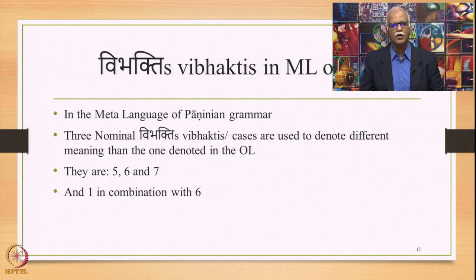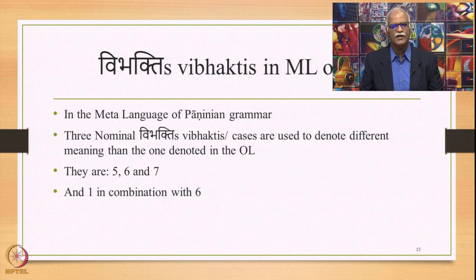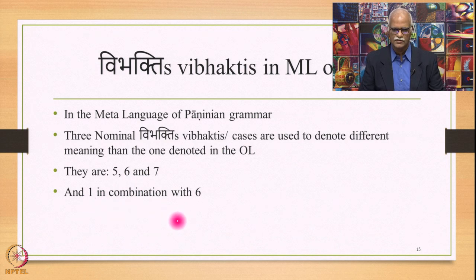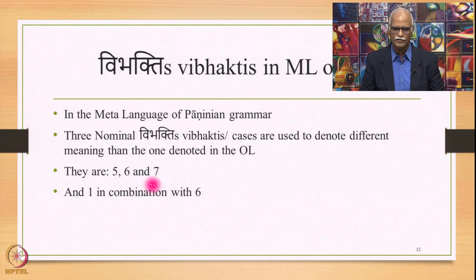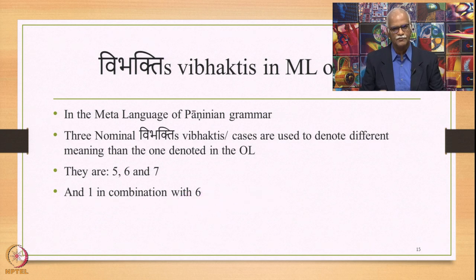Now let us look at the important Vibhaktis in the meta-language of Paninian grammar. In the meta-language, 3 nominal Vibhaktis are used to denote different meanings than in the object language: these are the 5th, 6th, and 7th cases, and also the 1st case in combination with the 6th. The 3 Vibhaktis which denote different meanings are the 5th (Panchami), the 6th (Shasthi), and the 7th (Saptami); and the 1st case, Prathama, used in combination with the 6th case Shasthi, also denotes a different meaning.